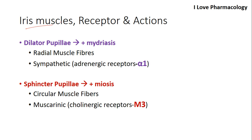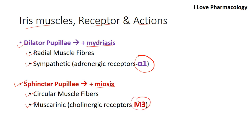Coming to the iris muscle receptor and its action: dilator pupillae activation leads to mydriasis — dilation of the pupil. The muscle responsible is the radial muscle fibers, mainly due to sympathetic activation, with the alpha-1 receptor involved. Stimulation of sphincter pupillae leads to miosis — pupillary size decreases. The muscle responsible is circular muscle fibers, with muscarinic (parasympathetic) innervation, and the main receptor is M3.